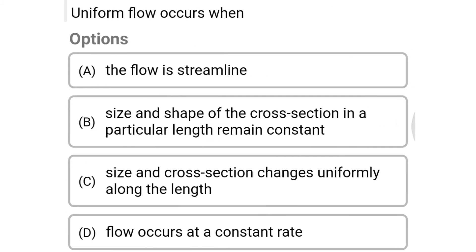Next question: uniform flow occurs when — Option A: the flow is streamlined. Option B: size and shape of the cross section in a particular length remain constant. Option C: size and cross section changes uniformly along the length. Option D: flow occurs at a constant rate. The correct answer is Option B.